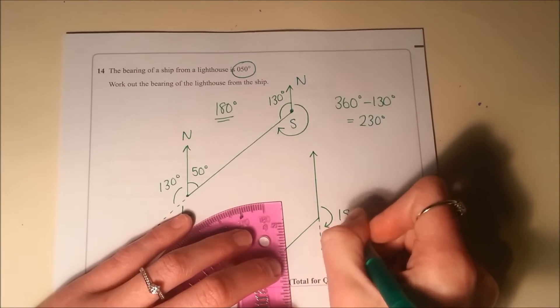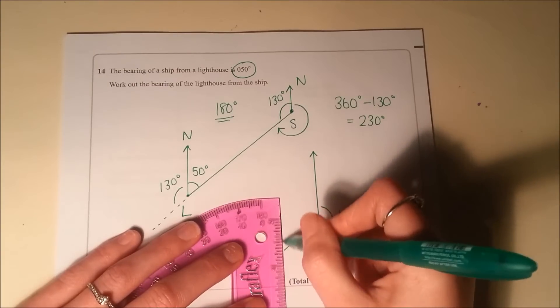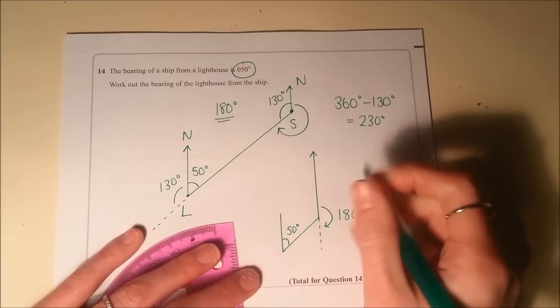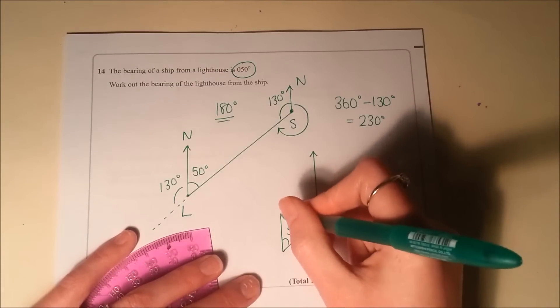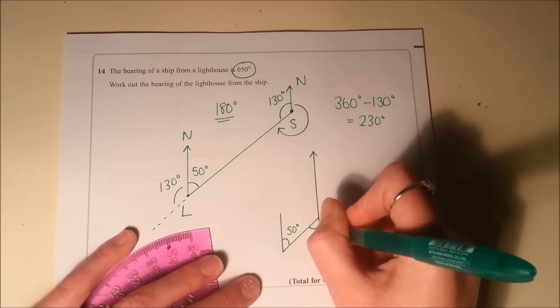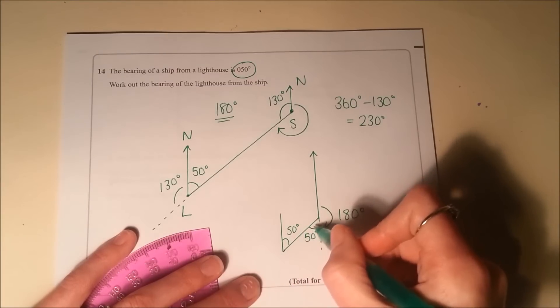I know that round there is 180 degrees, and if I think about what shape I've got here, that's 50 degrees. I've got a Z shape. Because of alternate angles, this angle here has to be 50 degrees.